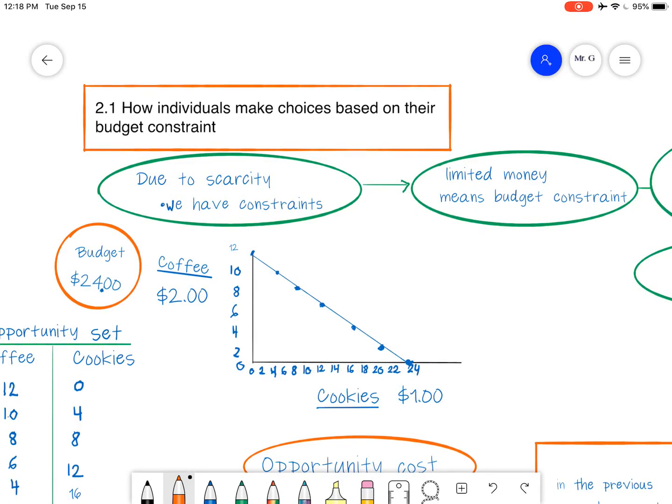Hi, it's Mr. G here today, and so we're going to be looking today at 2.1, how individuals make choices based on their budget constraint. And there is another video after this, so we won't be covering all of 2.1 in this video, so there is an additional video to look out for that will cover some additional concepts.